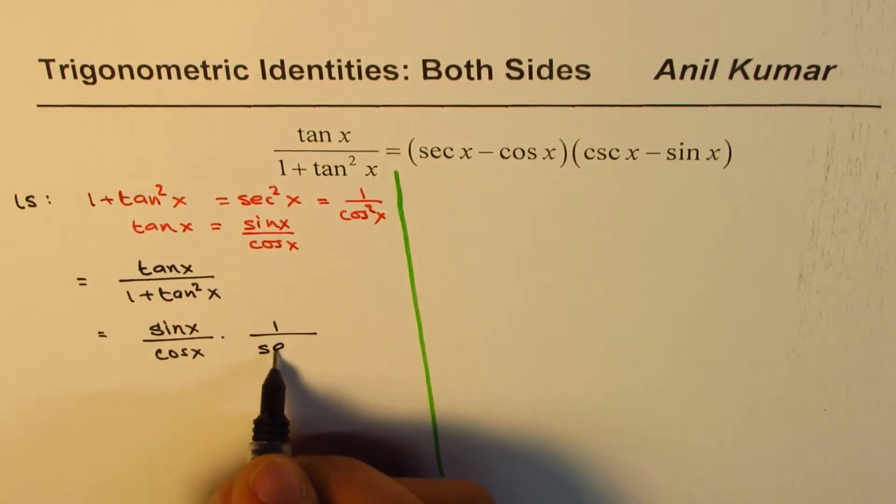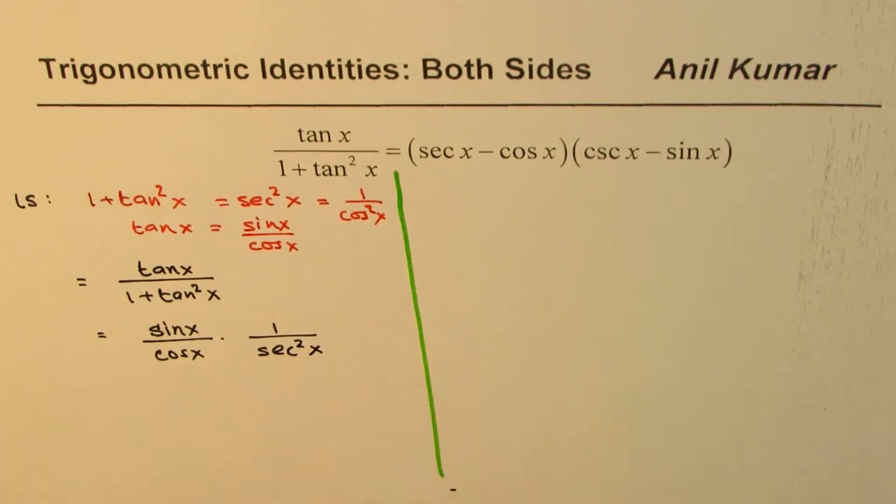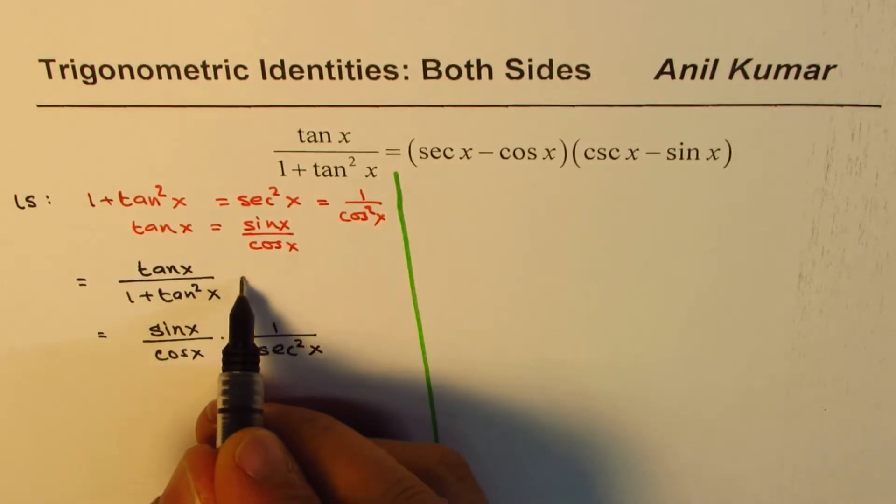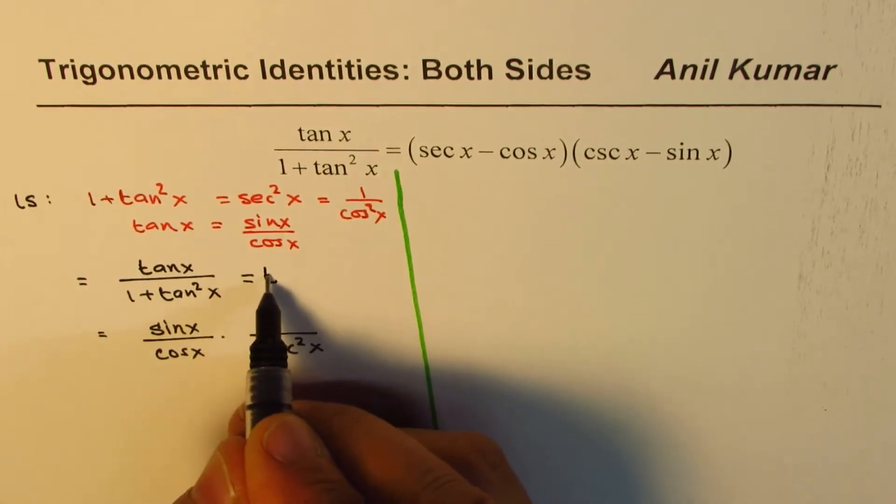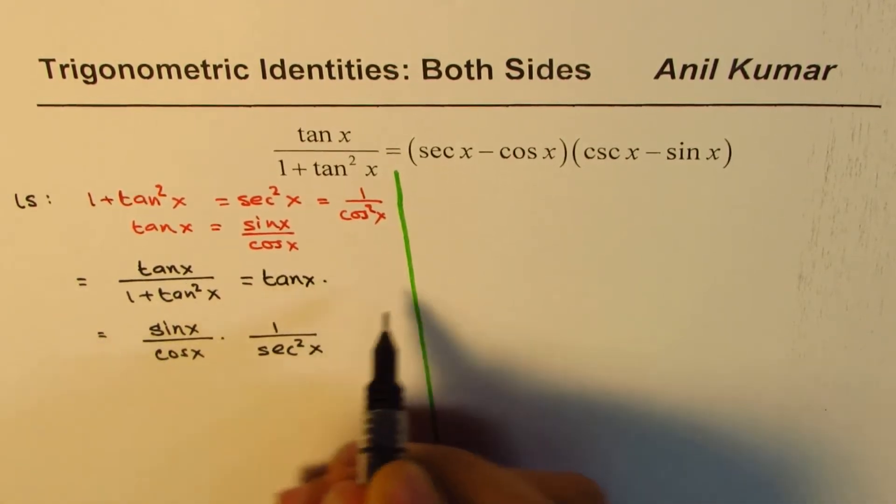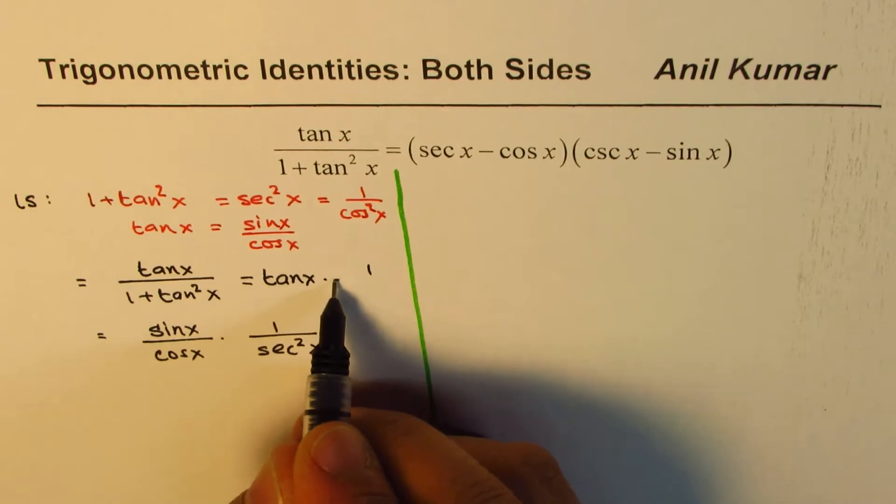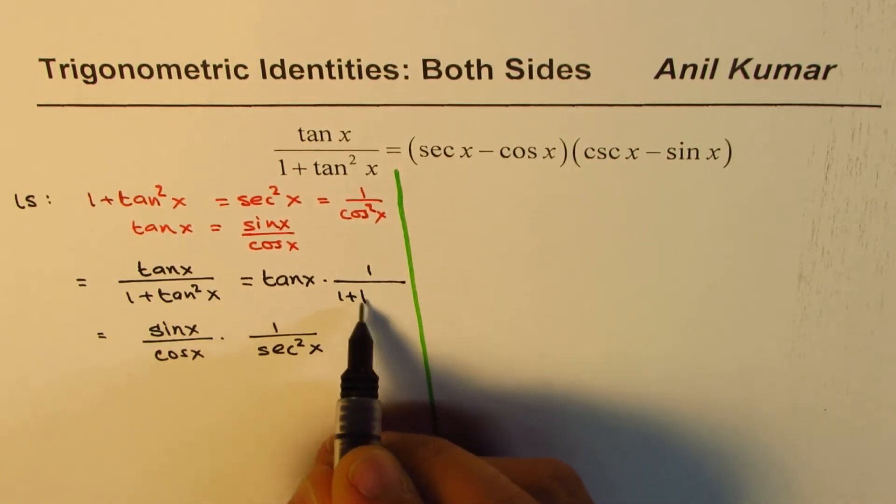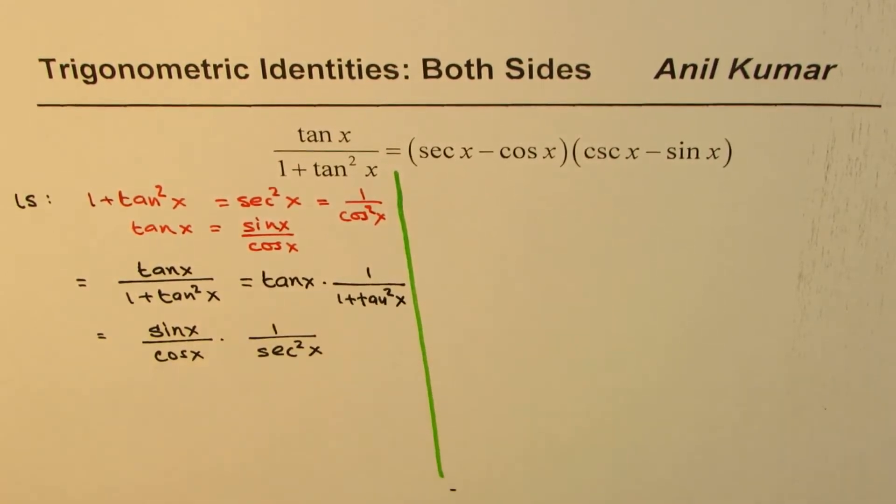Basically what I did was I kind of slid this slightly away, so I'm writing this as tan x times 1 over 1 plus tan square x. The idea which you get from here is that I'm avoiding layers of fractions, kind of linearizing the fractions.